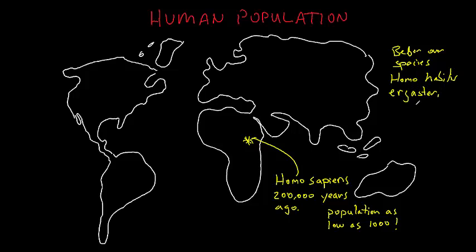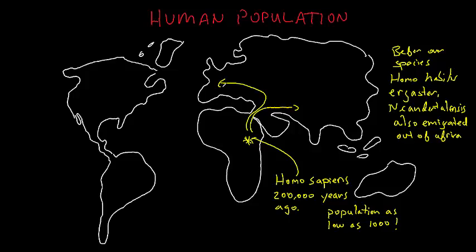Homo sapiens began emigrating out of Africa 100,000 to 125,000 years ago, and by 30,000 years ago had spread across most of the globe, but very low numbers as a species at one time before this spread.